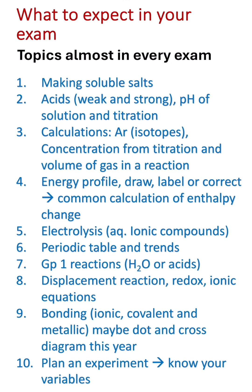There will always be a 'plan an experiment' question in Paper 1. They have never repeated the same experiment twice, so don't panic if it is something you haven't seen before. What you need to do is identify the three variables: the independent variable (the one you change), the dependent variable (the one you measure after changing the independent variable), and the control variables (which must be kept constant throughout). Once you identify these three variables, you will be able to plan your experiment.